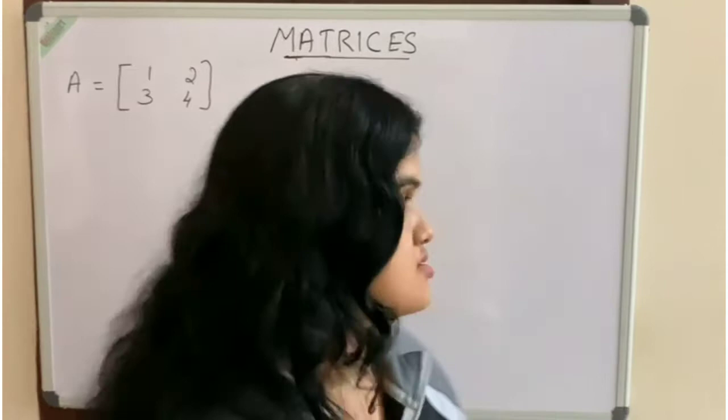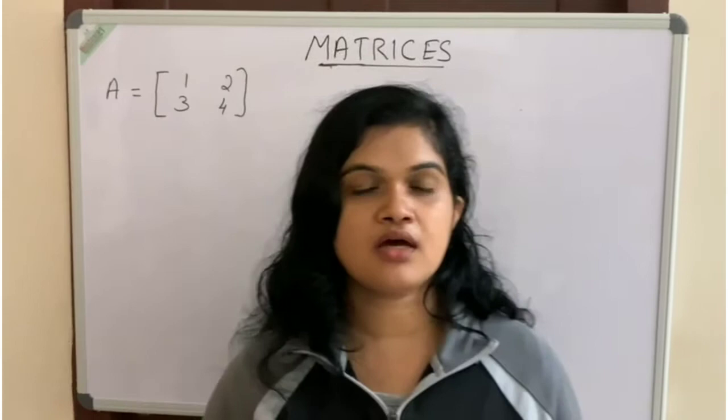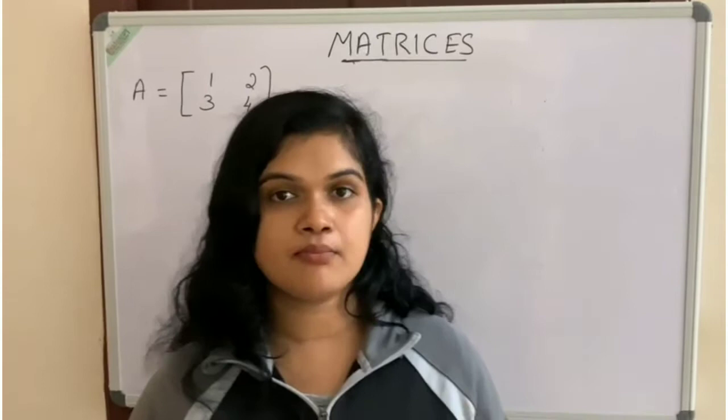As you know, matrix is a rectangular arrangement of numbers or entities that are arranged into number of rows and columns. Let's see, it is an example of a matrix.